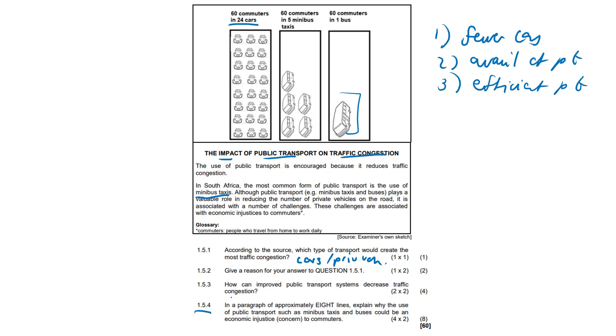Last question. In a paragraph of approximately eight lines, explain why the use of public transport, such as minibus taxis and buses, could be an economic injustice or concern to commuters. These eight line questions, I strongly encourage you to skip a line and just write four lines because that's still going to be eight lines and they can't mark you down. Skip a line. Thanks for watching the video. No, I'm joking. That was a terrible joke. If you do that, I might just have a heart attack. Please, it was a joke.